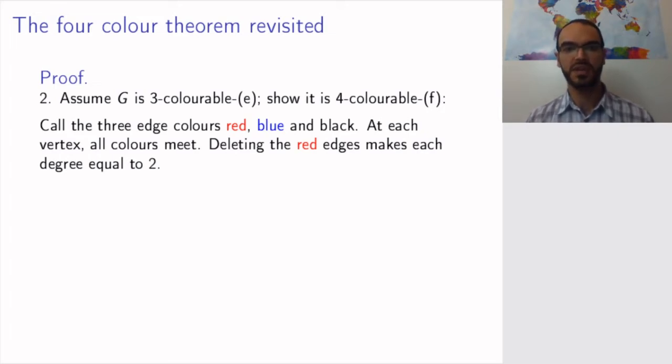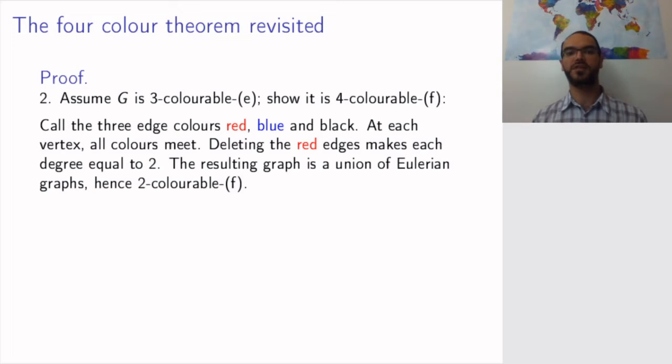So, that makes each degree equal to 2. So, if I have a vertex, and I have one black, one red, and one blue edge, and this is the same for all vertices, by deleting the red vertices everywhere, I will get a graph with each vertex degree equals to 2. But, this means that I have a graph where each vertex degree is even. So, the graph's components will be Eulerian. So, the resulting graph will be a union of Eulerian graphs. And we have proved already, in a previous theorem, that Eulerian graphs are two-face colorables.